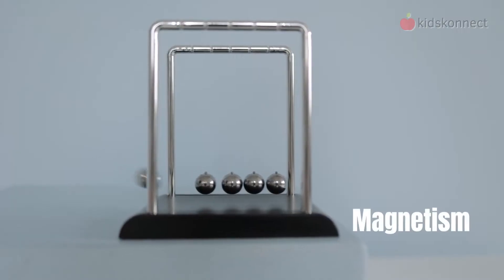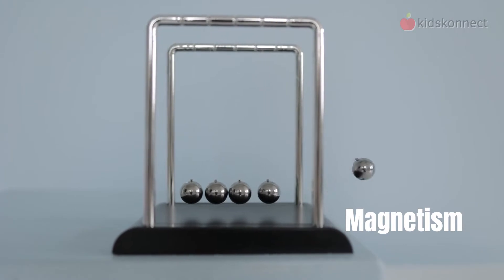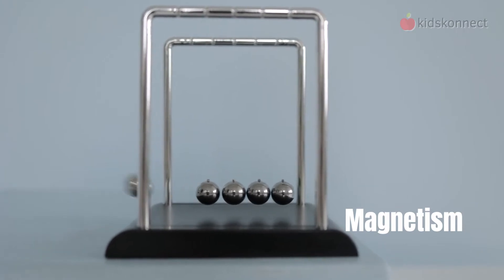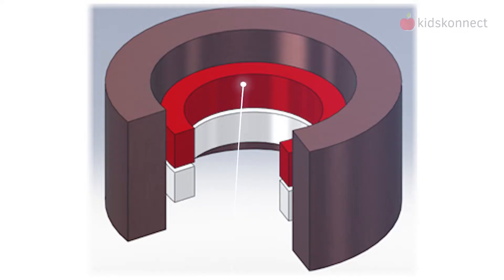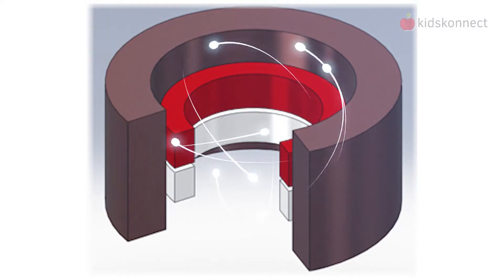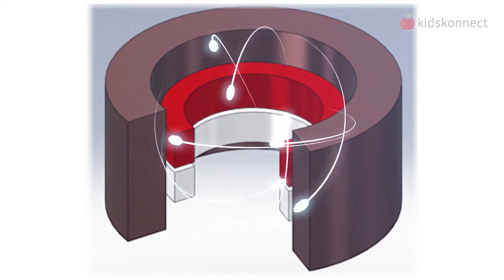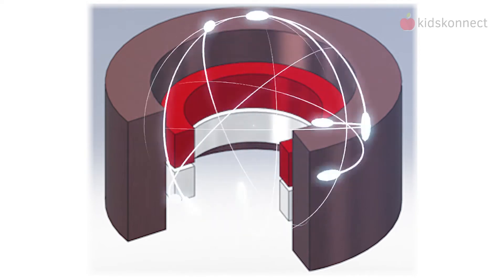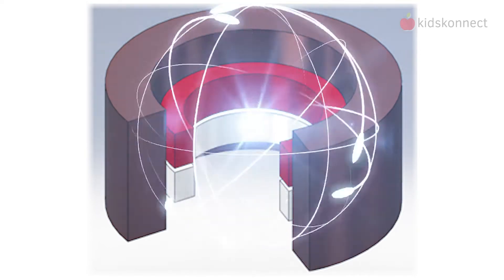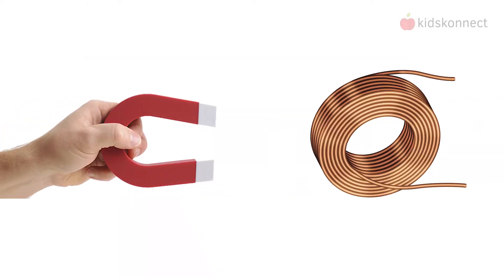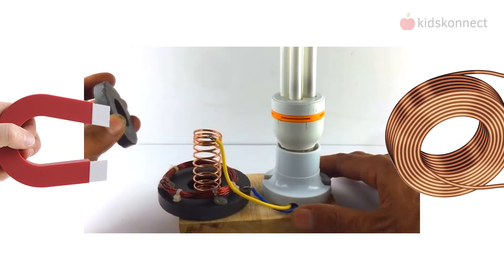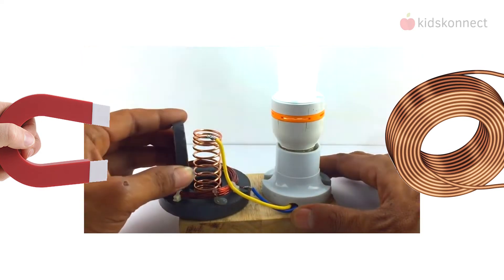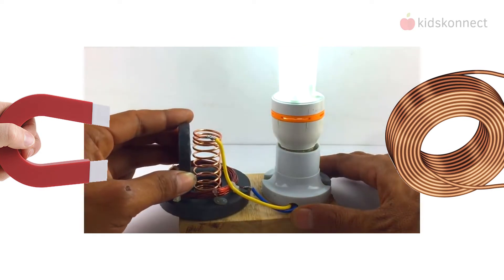We've also learned how to harness magnetism to generate electricity. This happens because electrons can move easily through copper, so if a magnet is moved quickly through a copper coil, the electrons will move and create electricity.